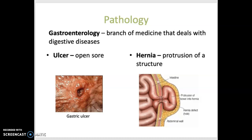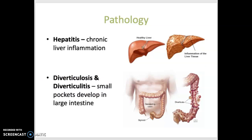Peptic ulcers are most frequently found in the stomach or the esophagus, usually due to excessive acid in the stomach. A hernia is the protrusion of a structure through the wall of the cavity in which it is contained. Next is hepatitis — remember, "-itis" means inflammation. This is chronic inflammation of the liver.